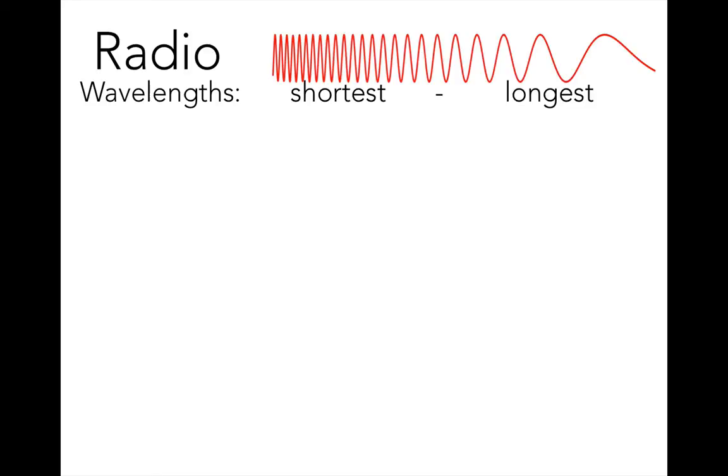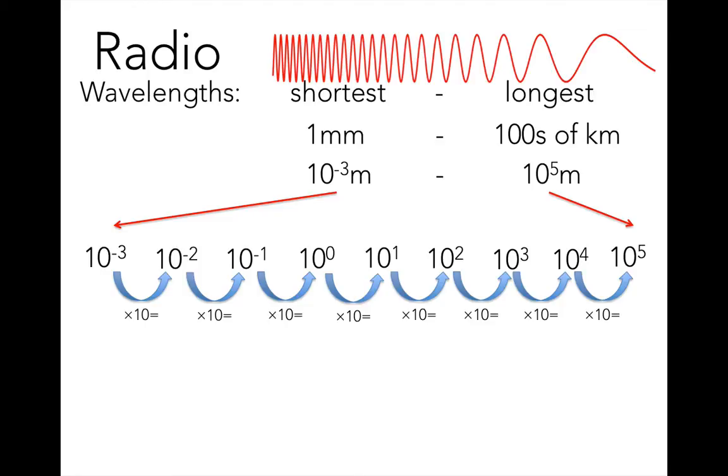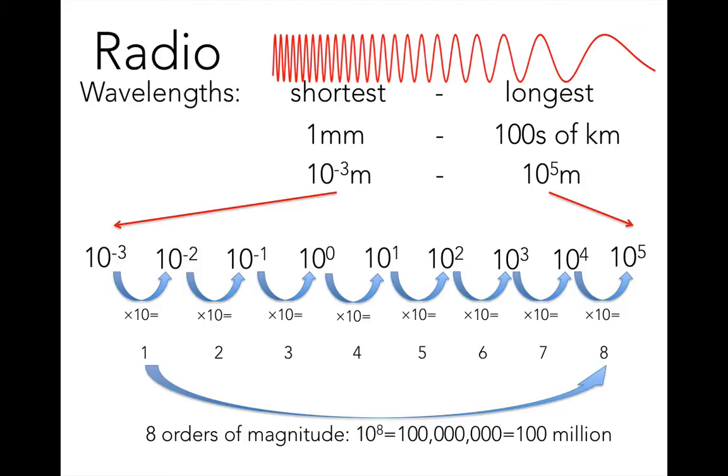Radio waves are very long, with wavelengths anywhere from a millimeter to hundreds of kilometers in length. If we write these as powers of 10 in meters, that's 10 to the negative 3rd power, all the way to 10 to the 5th power. We therefore say that radio waves span 8 orders of magnitude. The smallest ones are 10 to the 8th, or 100 million times smaller than the largest ones.